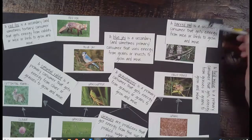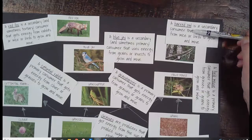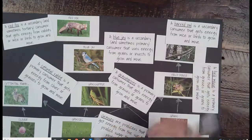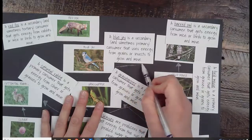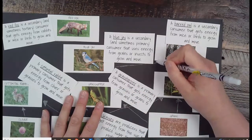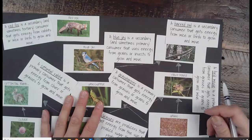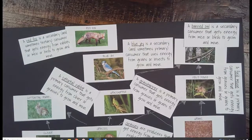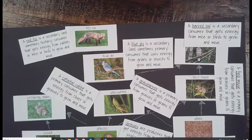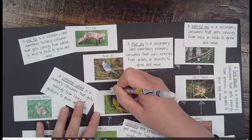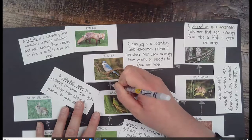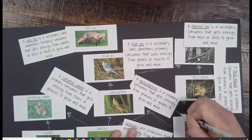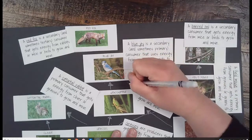A barred owl is a secondary consumer that gets its energy from mice or birds to grow and move, so I draw an arrow from mice and from the blue jay to the barred owl. The blue jay is a secondary and sometimes primary consumer that uses energy from grains or insects. I've got to take grasshoppers — my insects — to the blue jay, and also draw an arrow all the way from grains to the blue jay.